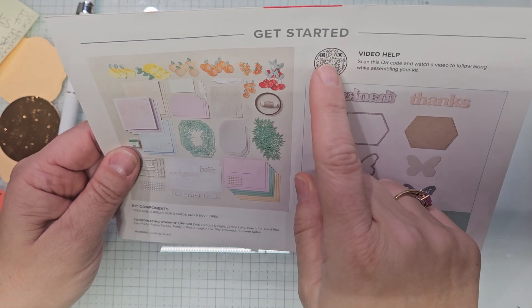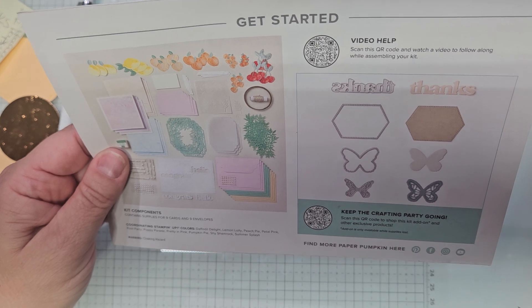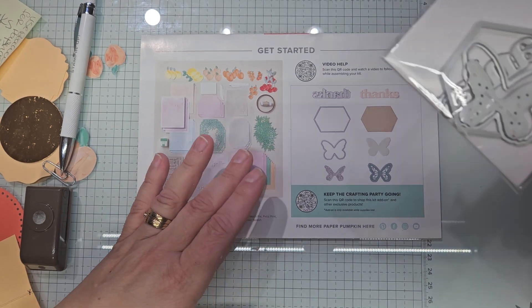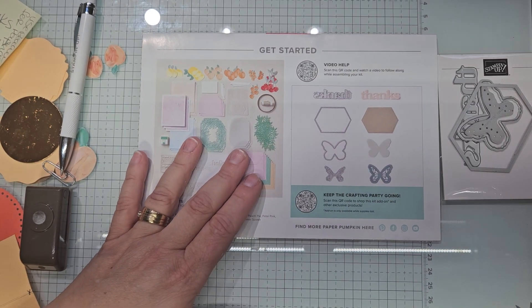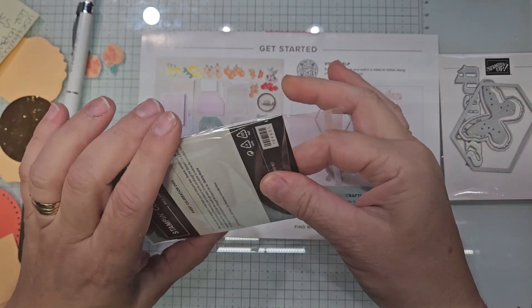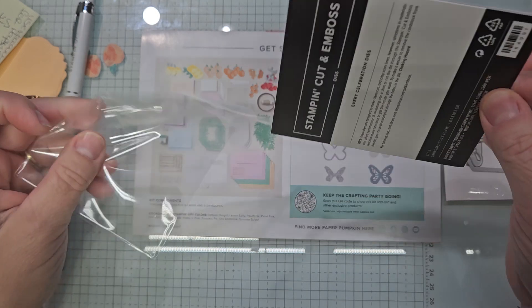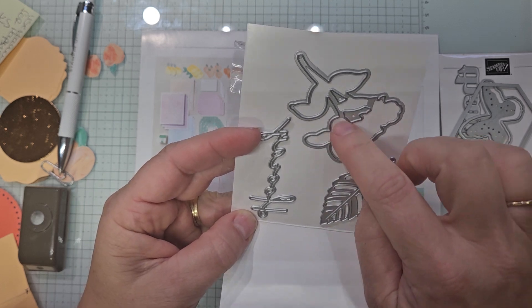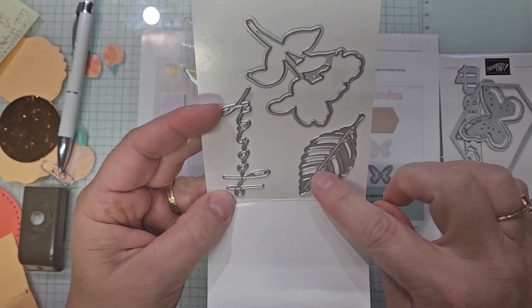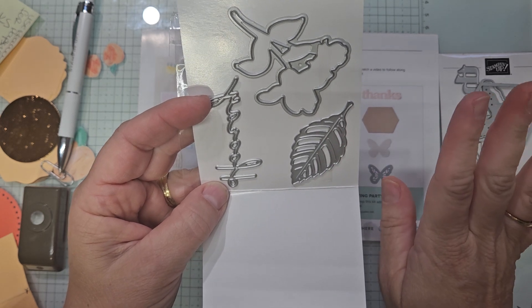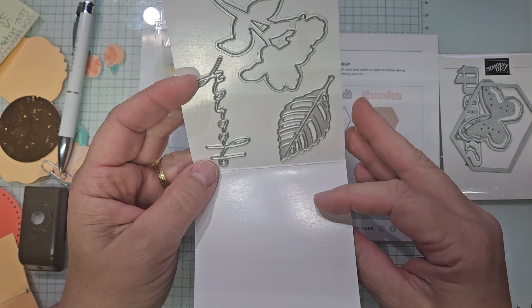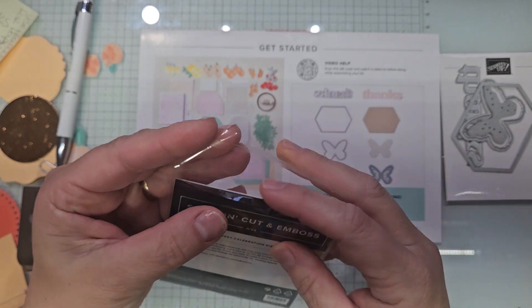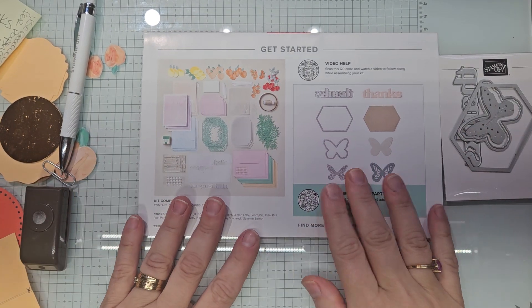This QR code right there will lead you to a video that will show you how to assemble the cards as they were designed. This one will lead you to the Thanks and Beyond dies. These new dies will coordinate with July, August and September. This will have a stamped image that will match the leaf. It's wonderful, you could do this in so many different colors and just layer them on a card and have it for fall really quick.